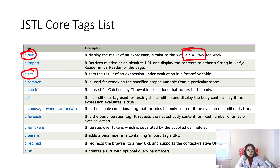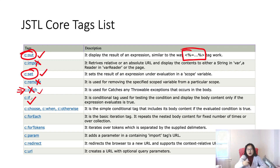You can also use c:catch to catch exceptions inside the JSP. I actually never used c:catch. Moving on — c:if is used for if conditions, and I do use that one.